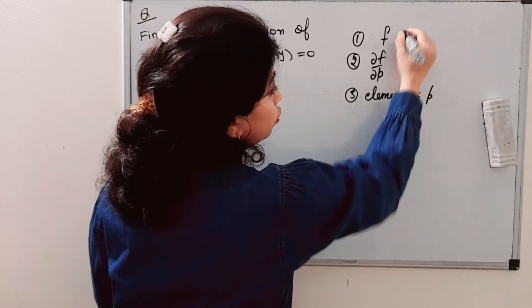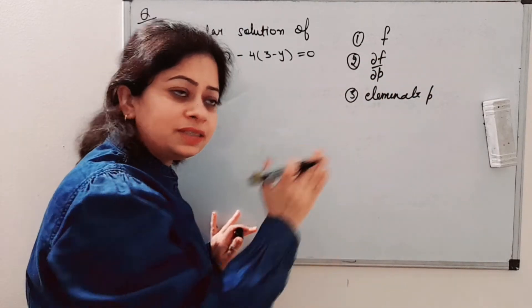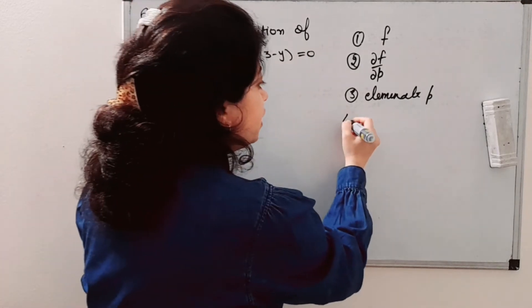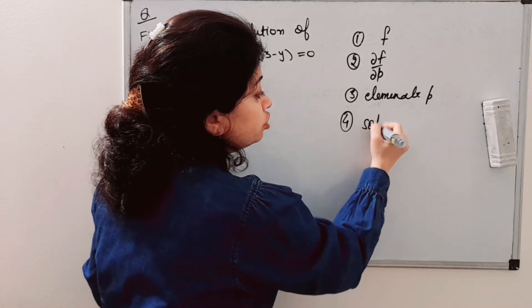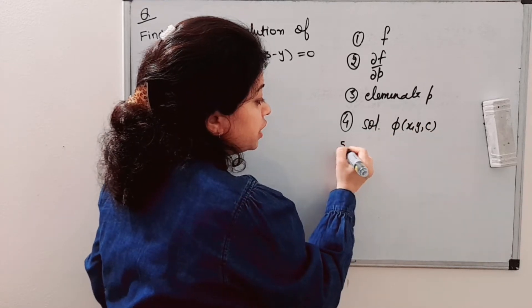Between equations 1 and 2, you need to eliminate p. We have discussed this in detail; I just want to summarize it. Then you will find the solution or general solution, and then you will